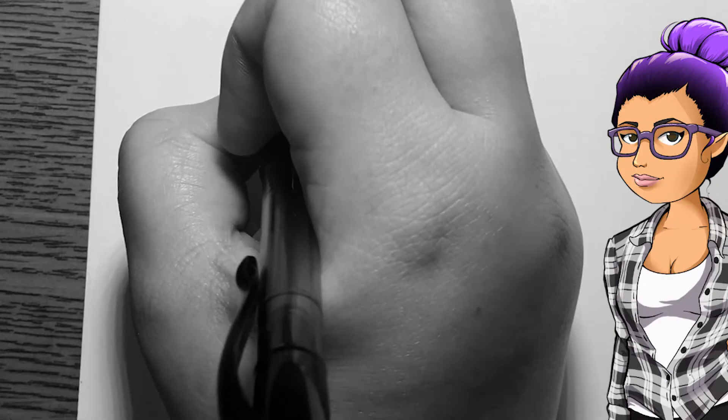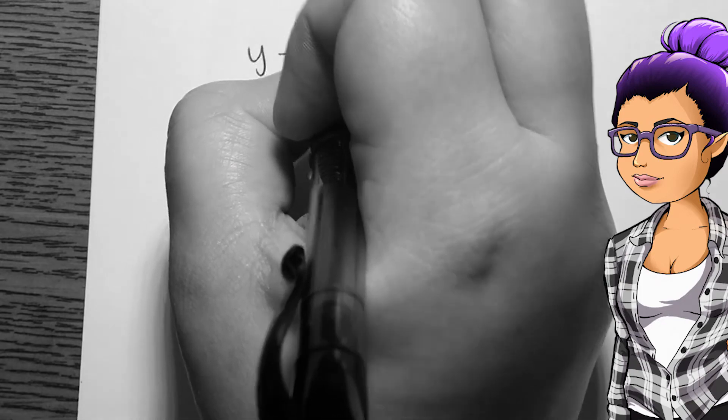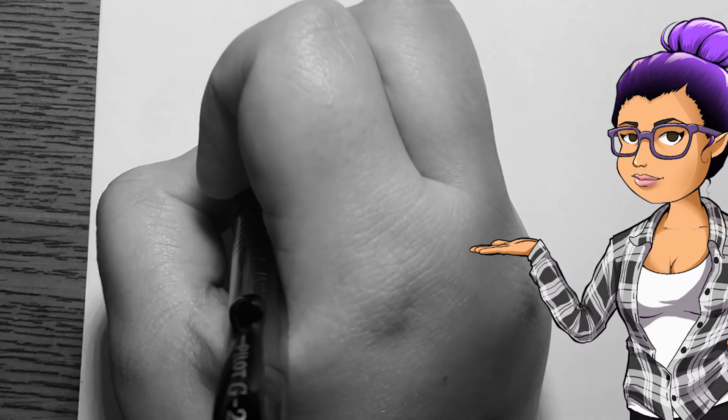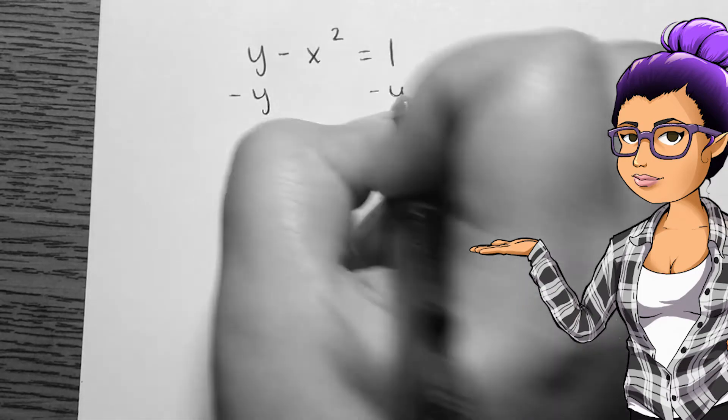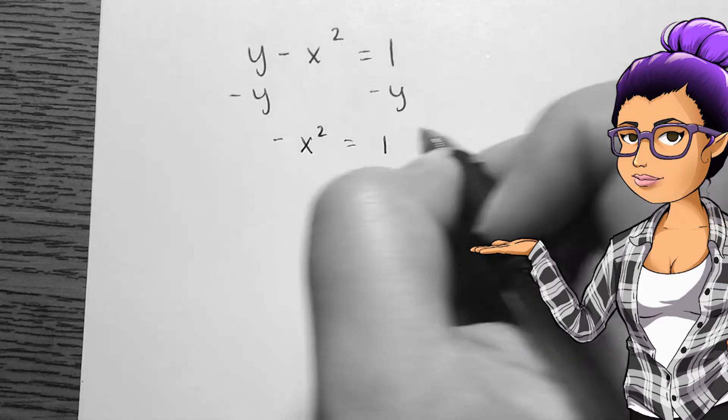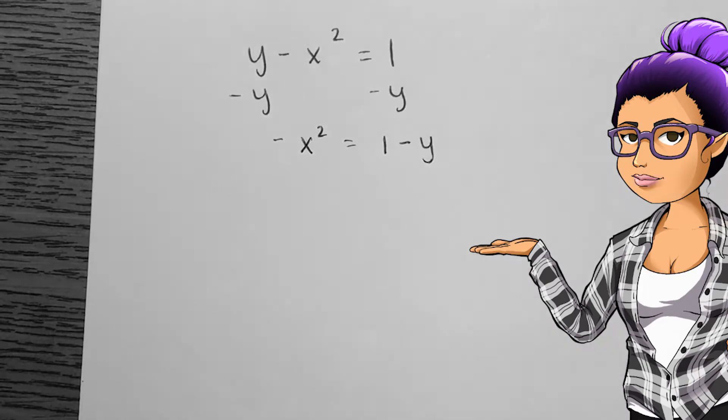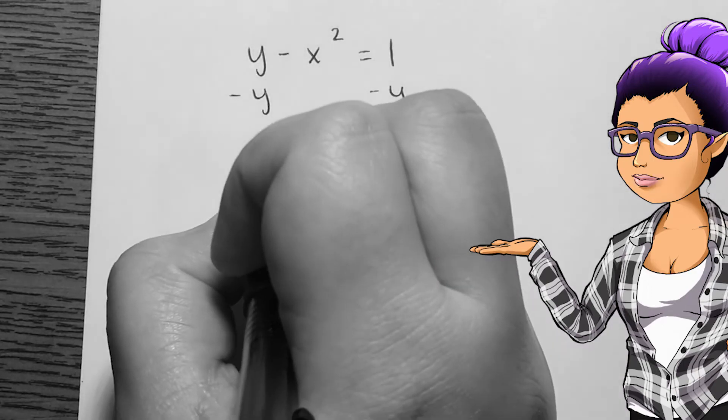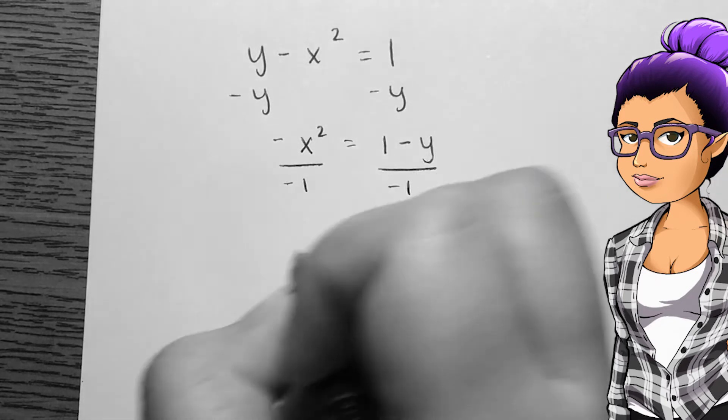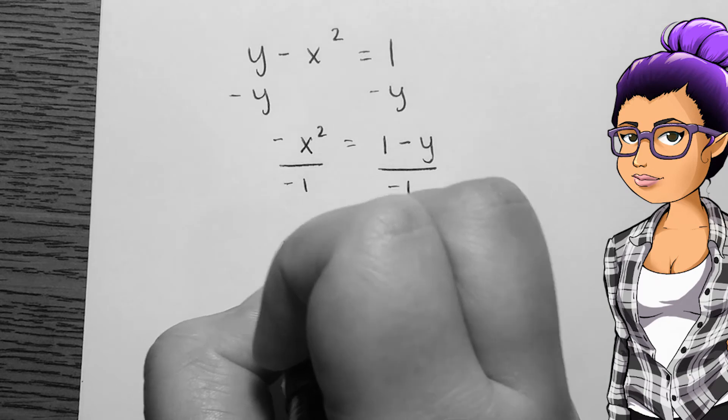Given the relation represented as an equation y minus x squared equals 1, is this a function of y? Asking if this is a function of y means that the variable y is our input to the potential function. Functions are typically structured as output equals other things in terms of the input. This equation would be structured as x equals other things in order for it to be a function.